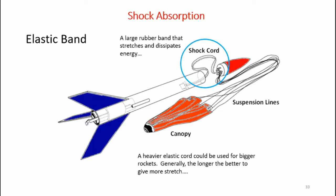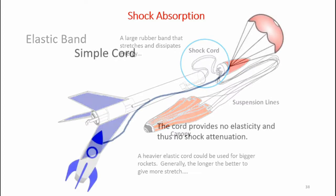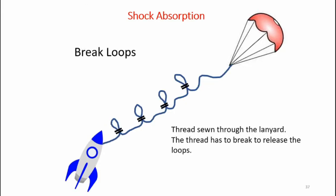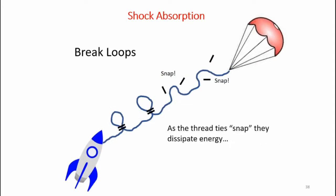There are many methods of shock absorption. You can use an elastic cord, a simple solid cord, slip loops which pull open during deployment, or break loops which are sewn loops that snap and break, dissipating energy as the parachute opens. Now let's conduct some simple experiments to see just how well these techniques work.